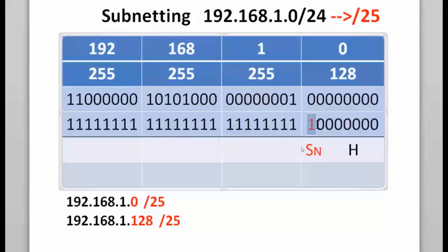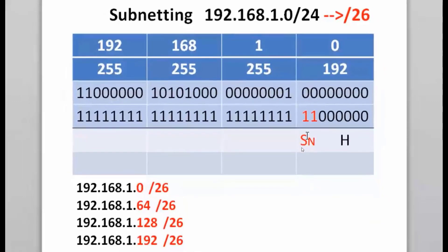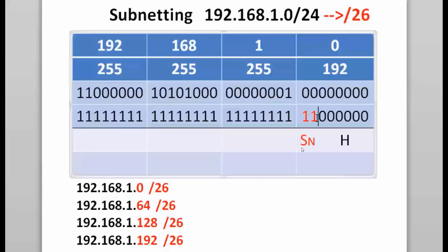With seven zeros in the host portion, two to the seventh power is 128, minus two makes 126 usable hosts per subnet. If I borrow two subnetwork bits from the host portion of the original 192.168.1.0 slash 24 network, I now have slash 26. With two borrowed bits, I have two to the second power, effectively four subnetworks.